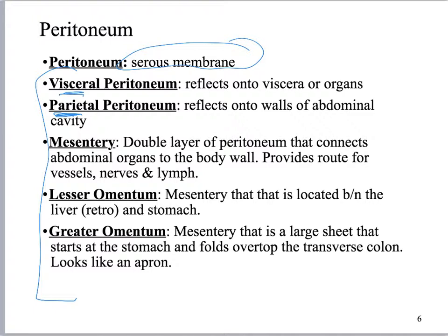We have special peritoneum that gets a different name because it is structurally different from the rest of the peritoneum. Mesentery is formed when you take a double layer of visceral peritoneum and fold it over like a sandwich. In the middle you have a route for vessels, nerves, and lymphatic vessels. Mesentery connects the abdominal organs to the wall, anchoring them so they don't float around, as well as providing a route for things to get to and from them.